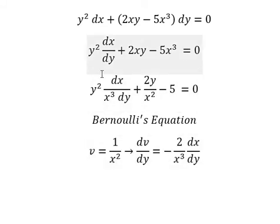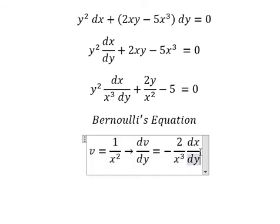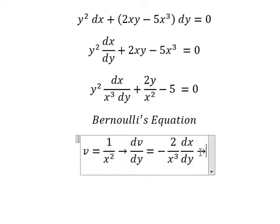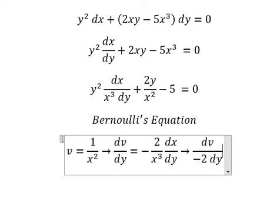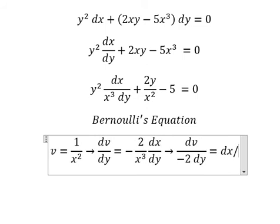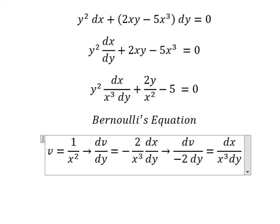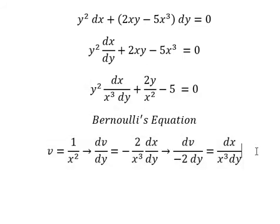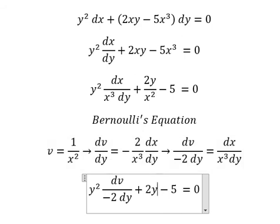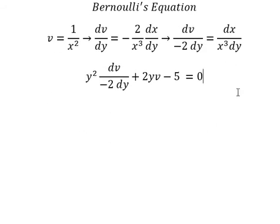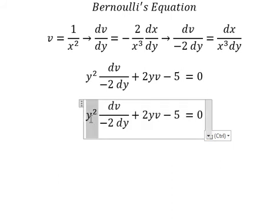Because we don't have negative 2, so we need to divide both sides by negative 2. Next, this expression we change by this one, and this one we change by v. Next we divide both sides by y squared over negative 2.